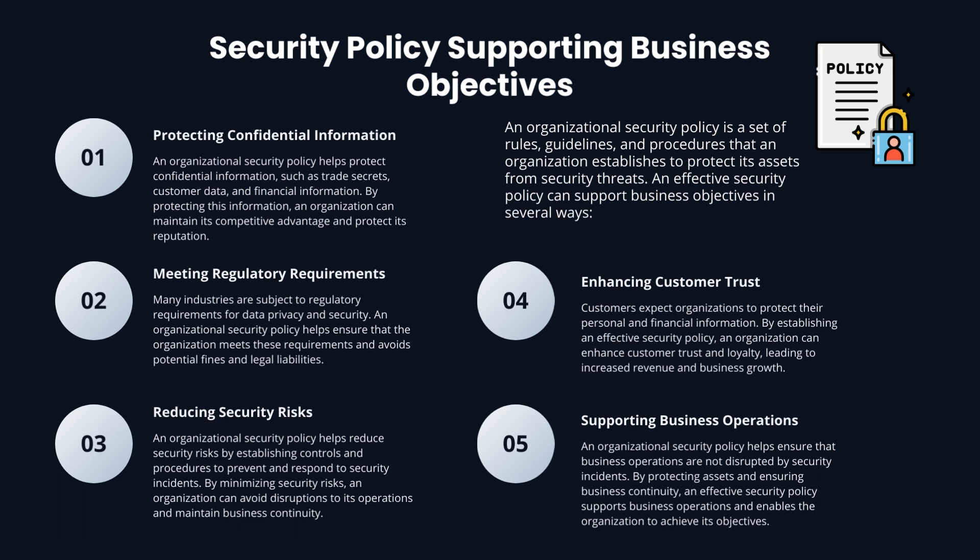Second, meeting regulatory requirements: many industries are subject to regulatory requirements for data privacy and security. An organizational security policy helps ensure that the organization meets these requirements and avoids potential fines and legal liabilities. Third, reducing security risks: an organizational security policy helps reduce security risks by establishing controls and procedures to prevent and respond to security incidents. Fourth, enhancing customer trust: customers expect organizations to protect their personal and financial information. By establishing an effective security policy, an organization can enhance customer trust and loyalty, leading to increased revenue and business growth.